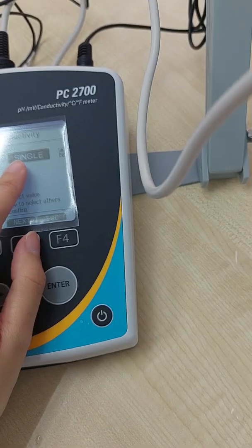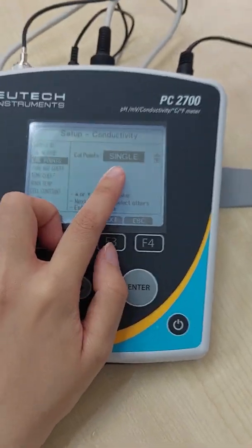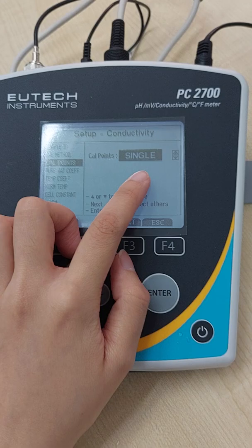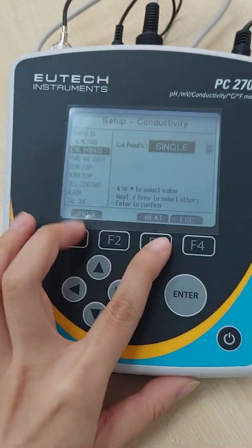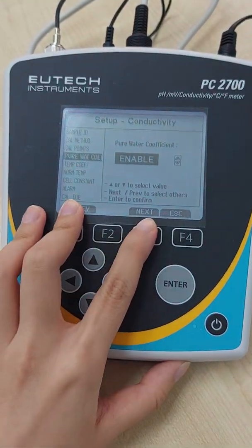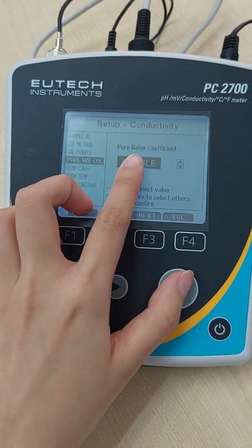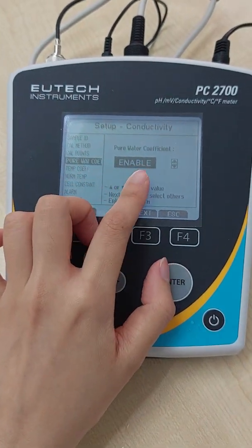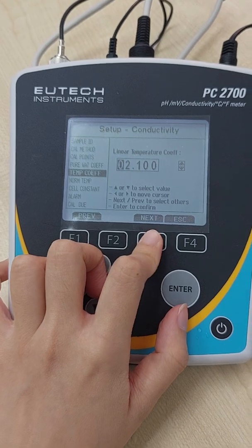Cal point, usually single point will be sufficient, whichever that is closer to your sample. This one is for the pure water. Usually we just leave it on.